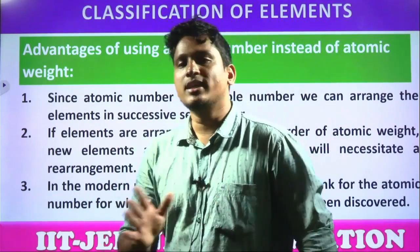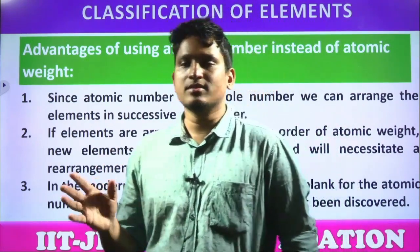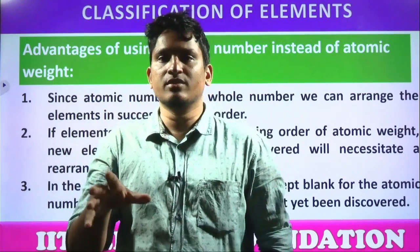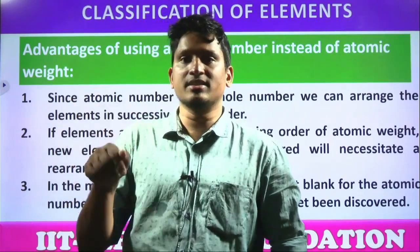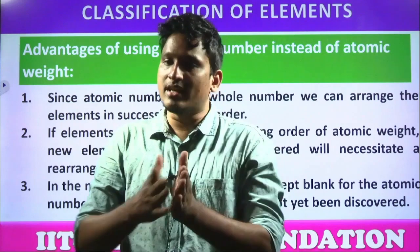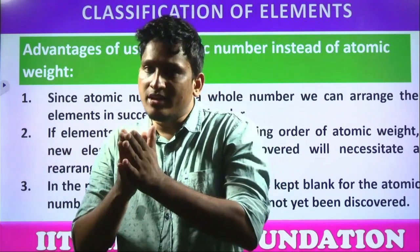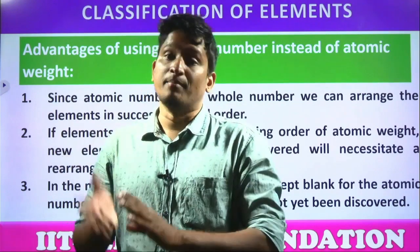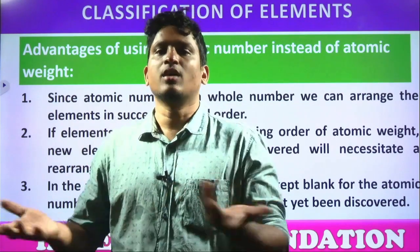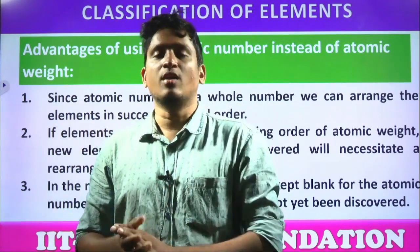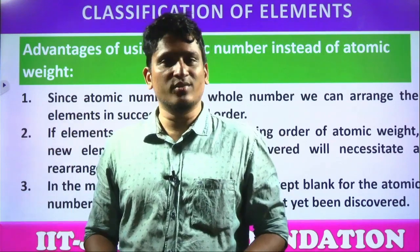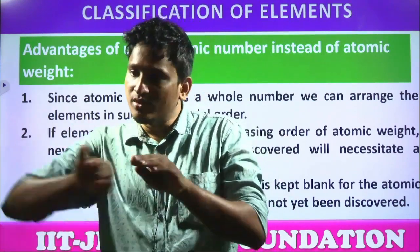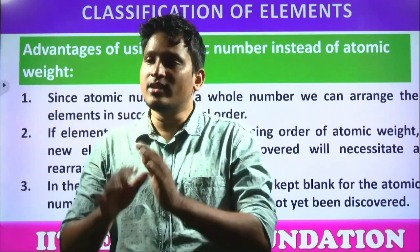That means, if all the elements are arranged according to atomic masses and in between some element is discovered, can we give it a different position? Nobody knows. We need to separate the whole block and create a separate space. Mendeleev gave certain spaces, but how would we know? If any new element is discovered, we need to move all the elements and the order will be gone.